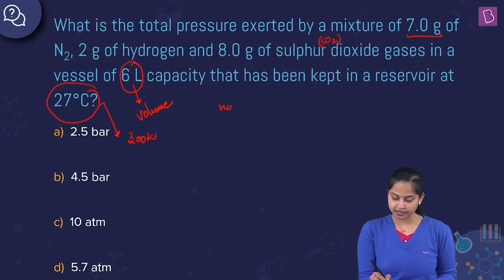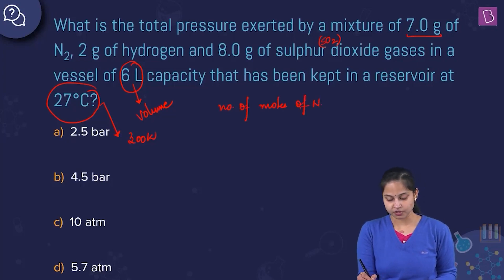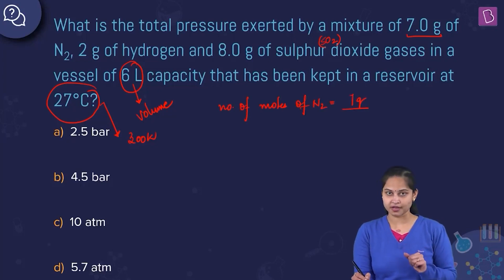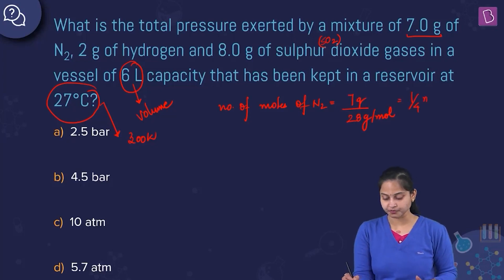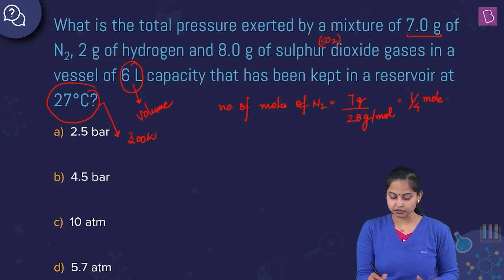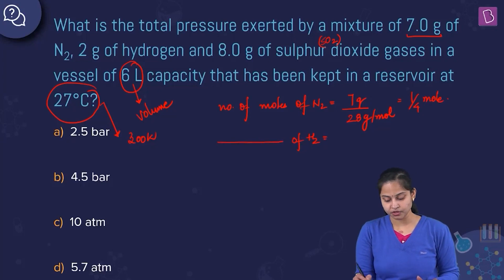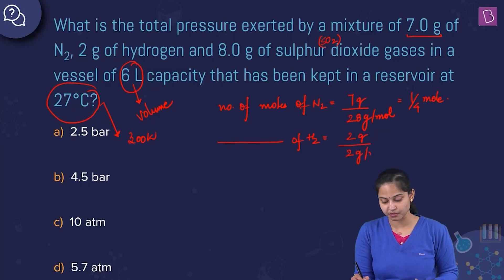Number of moles of nitrogen equals given mass 7 grams divided by molecular mass of N2, which is 28 grams per mole. So it becomes 1/4 mole. Number of moles of hydrogen gas equals given weight 2 grams divided by molecular mass, which is 2 grams per mole, which equals 1 mole.